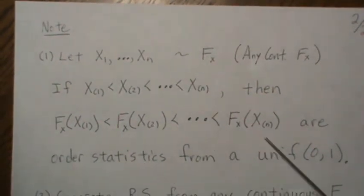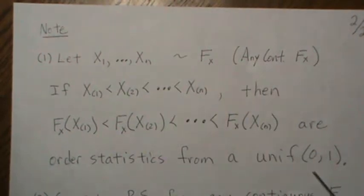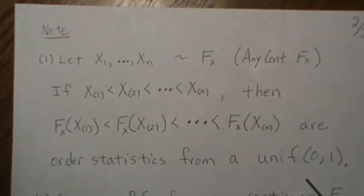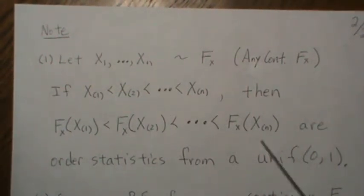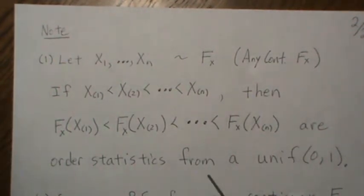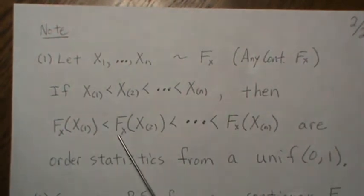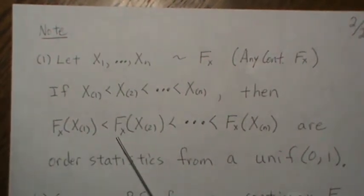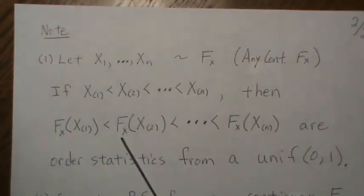Well these are order statistics from a uniform 0-1 distribution. And again this consequence is used so much in nonparametrics that you don't actually have to know the true distribution function - we'll work with this uniform distribution.